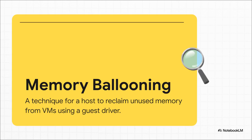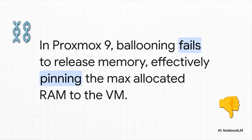First up is ballooning. This feature is supposed to be the hero — a clever trick where the host can ask a VM, 'Are you actually using all that RAM I gave you?' And if the VM says no, the host can take it back. It's meant to be dynamic and efficient. But in Proxmox 9, our hero has turned into a villain. The ballooning just isn't working right. Instead of letting unused memory go, the system pins the maximum allocated RAM to that VM, so the host can never get that memory back.